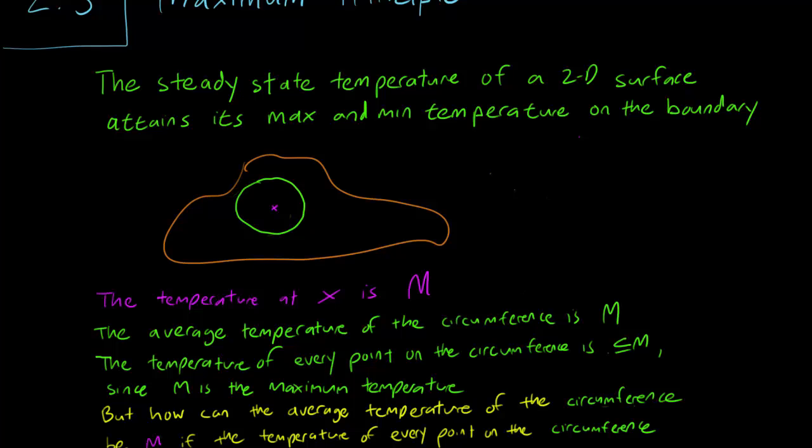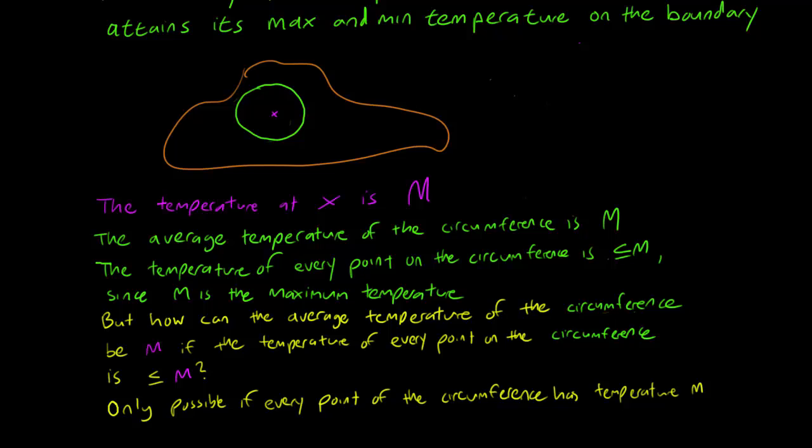But how can the average temperature of the circumference be M if the temperature of every point on the circumference is less than M? A little bit of thinking tells us that this is only possible if every point of the circumference has temperature exactly M.